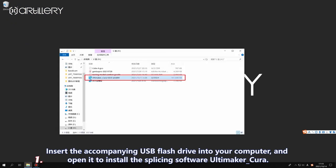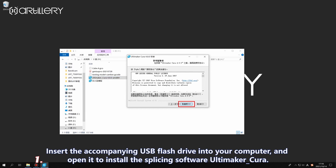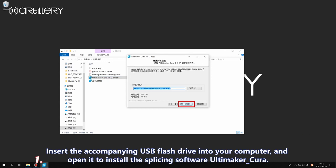Insert the accompanying USB flash drive into your computer. Open the USB flash disk and install the slicing software Ultimaker Cura 4.05.